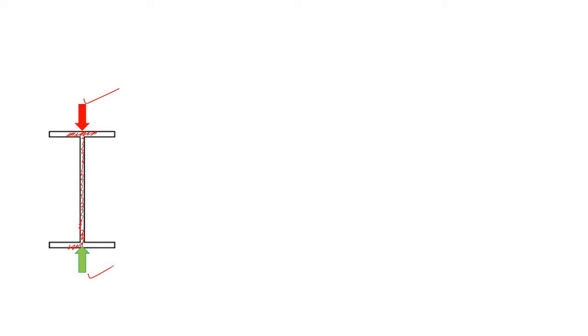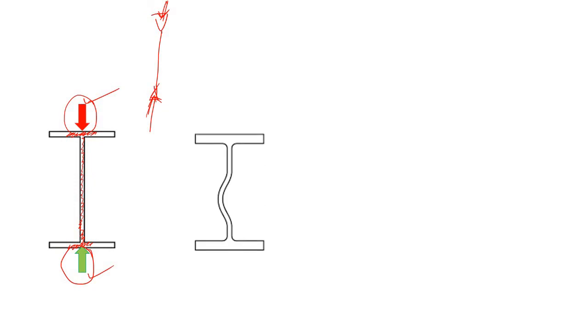Consider this particular zone under the externally applied load and the internal reaction force. We have cut out this zone — we have an I-section or wide flange section, and this is the external load with the reaction force. This web part is actually being held by the flanges, so we can consider the web part as acting like a column subjected to a compressive load, which tends to buckle.